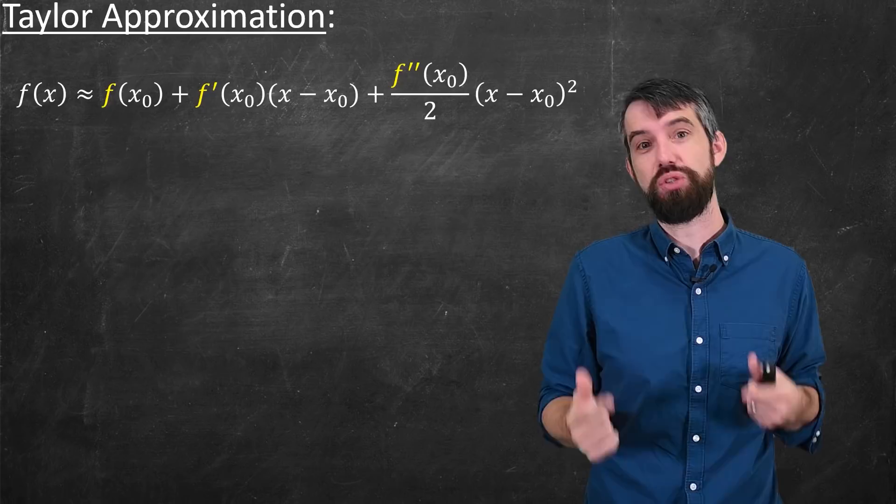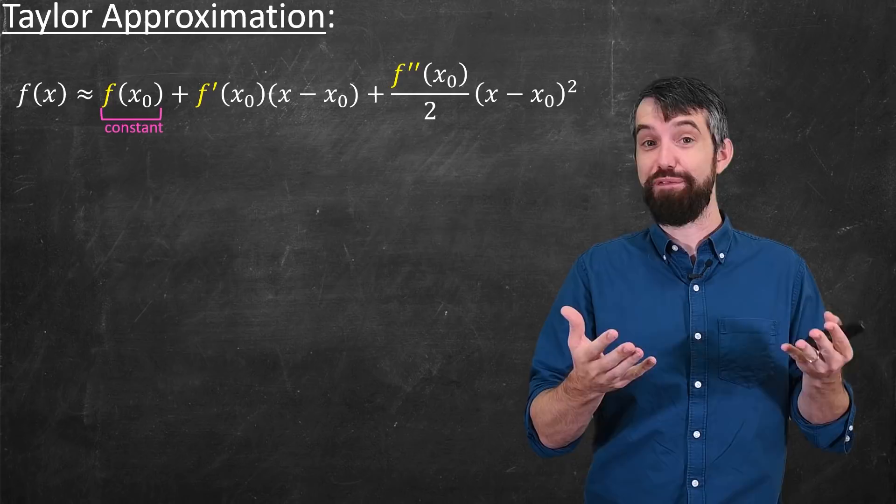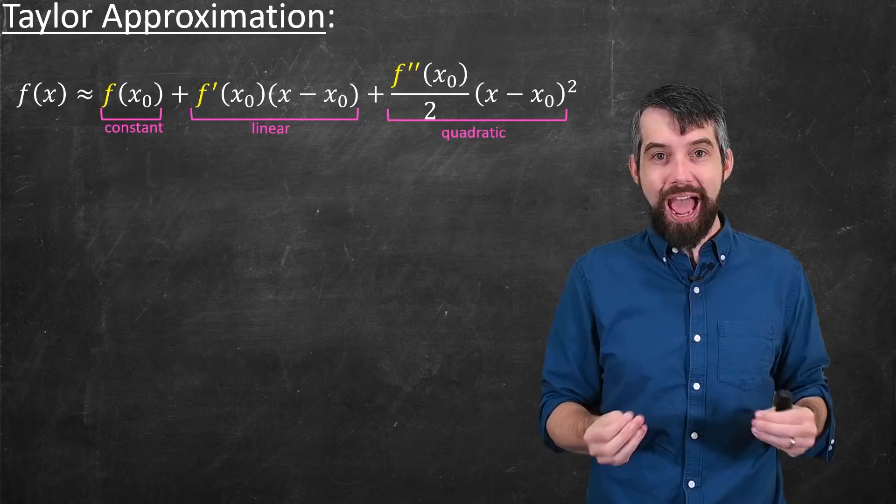You're saying I'm going to approximate it at a point x₀, it's just going to be the function at x₀. Secondly, you get a linear term, which its coefficient is given by the derivative, and finally a quadratic term, (x-x₀)², and its coefficient is the second derivative divided by 2.